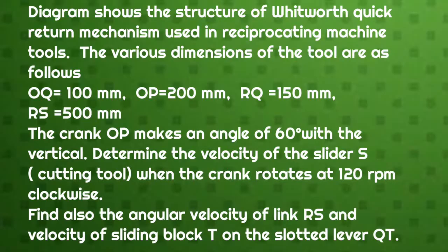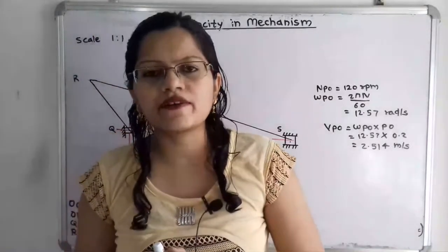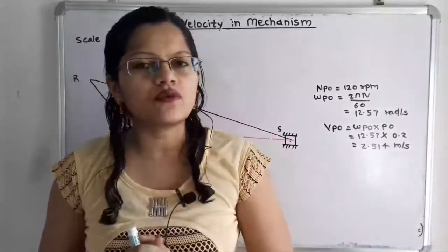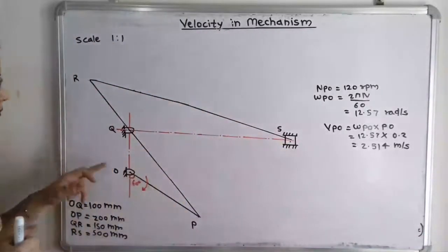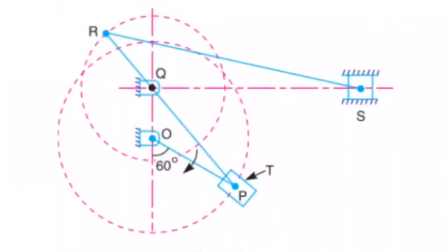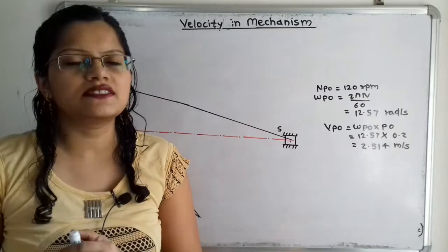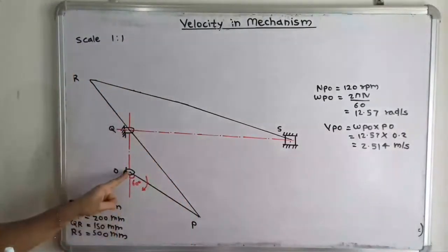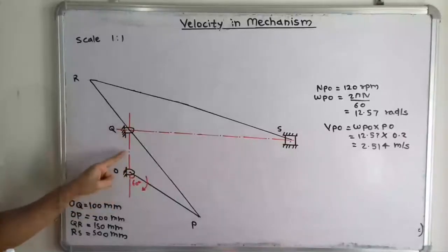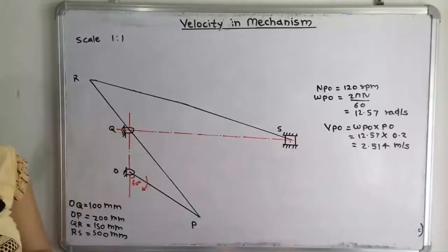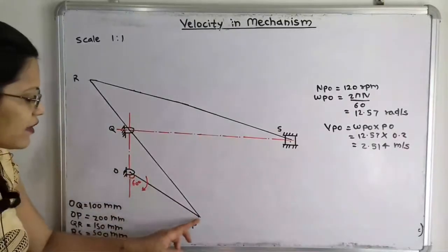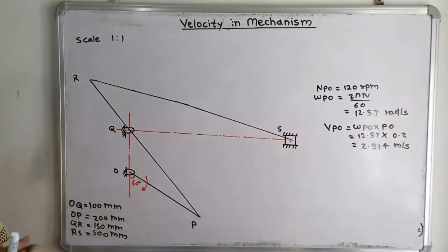Now let us first draw the space diagram with suitable scale. Here we will use scale 1 is to 1. If we observe the diagram, there are two fixed points — point Q and point O — and the distance between them is given: OQ = 100 mm, that is 10 cm. So we draw a vertical line and select two fixed points O and Q at 10 cm apart. The crank OP makes a 60 degree angle with the vertical.